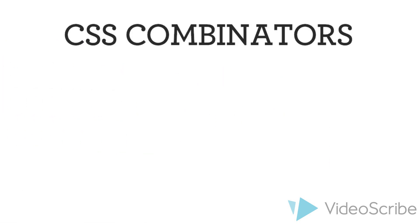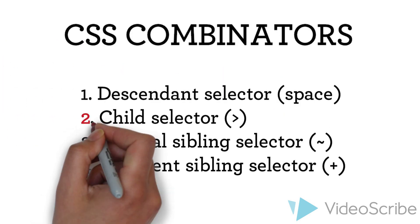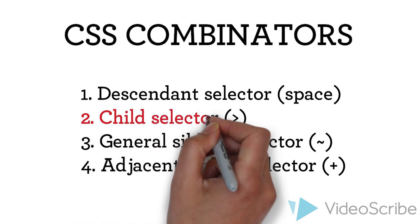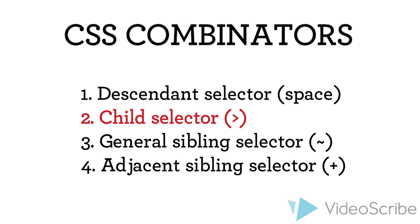Let's move on to our second combinator, the child selector. Again, the name gives a nice hint about the behavior. This selector is represented by the greater than sign. It is quite similar to the first combinator, the descendant combinator. But instead of selecting all descendants of a certain type, it only works on the children.